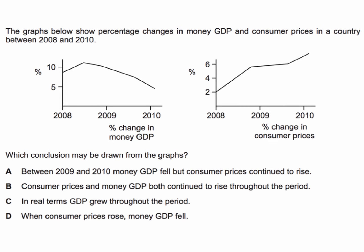The graphs below show percentage changes in money GDP on the left hand side and percentage changes in consumer prices in a country on the right hand side, between the years 2008 and 2010, with the data shown in graph format. The question for you to have a go at today is: what conclusion can be drawn from the data in the two graphs?